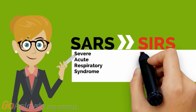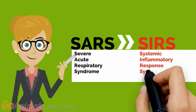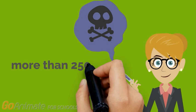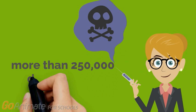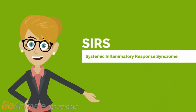However, SARS — Systematic Inflammatory Response Syndrome, also known as sepsis — is the most frequent cause of mortality in the intensive care unit and is responsible for more than 250,000 deaths in the United States annually. This video aims to spread awareness regarding sepsis and help people understand the current treatments in place to treat it.